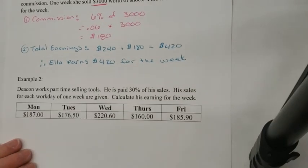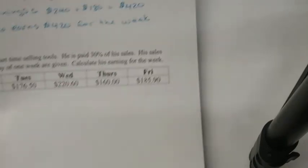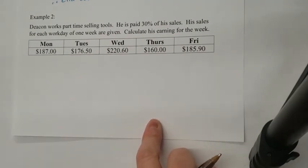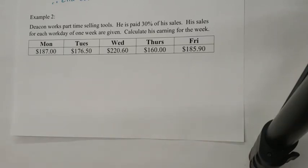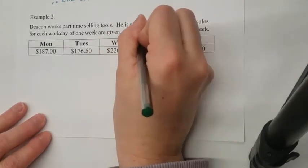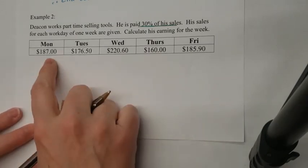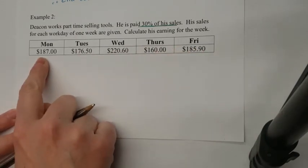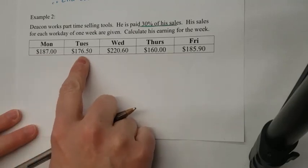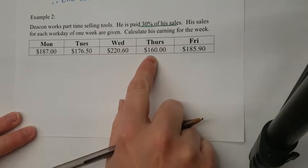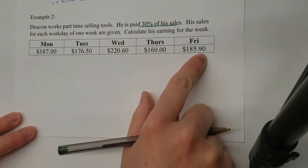Now let's do another example. Deacon works part-time selling tools. He's paid 30% of his sales, so all his money comes from sales — if he doesn't make any sales, he's not going to get paid anything. He actually sells quite well. Monday he made $187, Tuesday $176, Wednesday $220, then $60, $160, and $185.90.